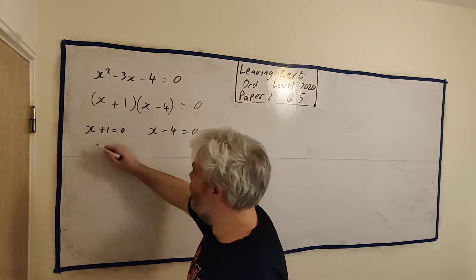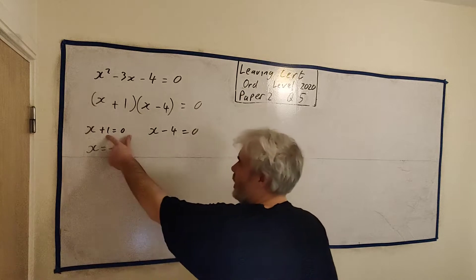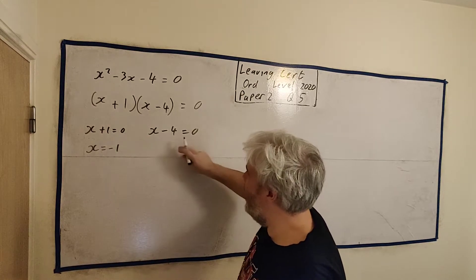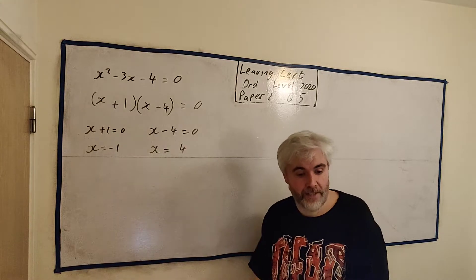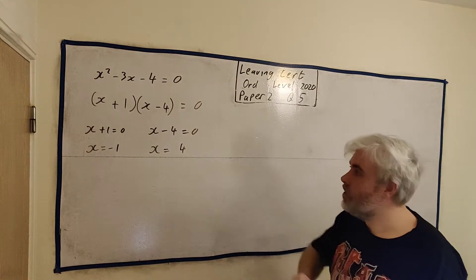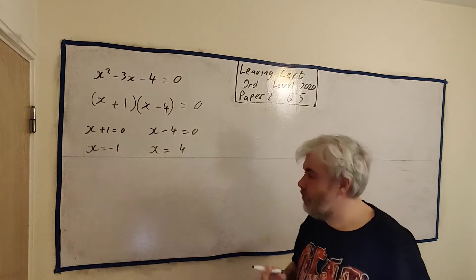So if this is 0, well that means x must equal minus 1. Add 4 to both sides, we get x is equal to 4. So there are two possible answers for this question. And that's it. You're finished. So if you're able to do this factorizing bit, you're finished.